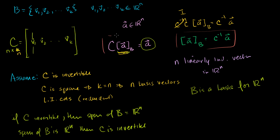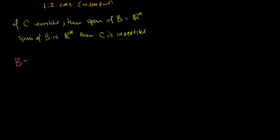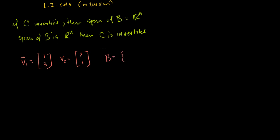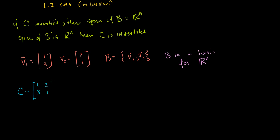Let's do some concrete examples. Say I have a basis where V1 equals the vector (1, 3) and V2 equals the vector (2, 1), and my basis B is the set {V1, V2}. These two vectors are linearly independent, so with two linearly independent vectors in R2, B is a basis for R2. The change of basis matrix C equals [[1, 2], [3, 1]], and we know C is invertible.